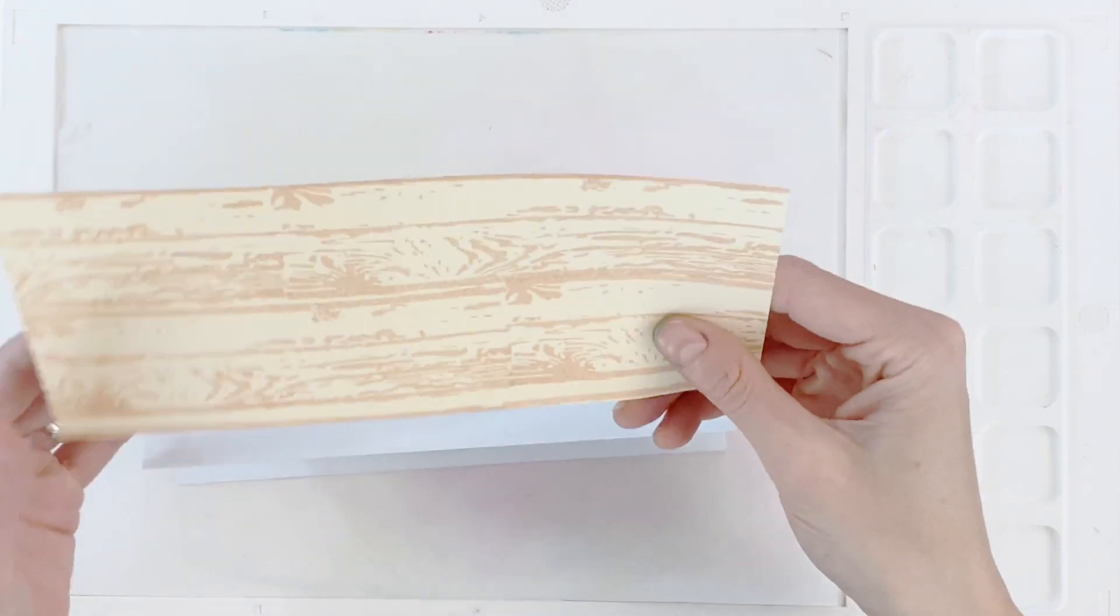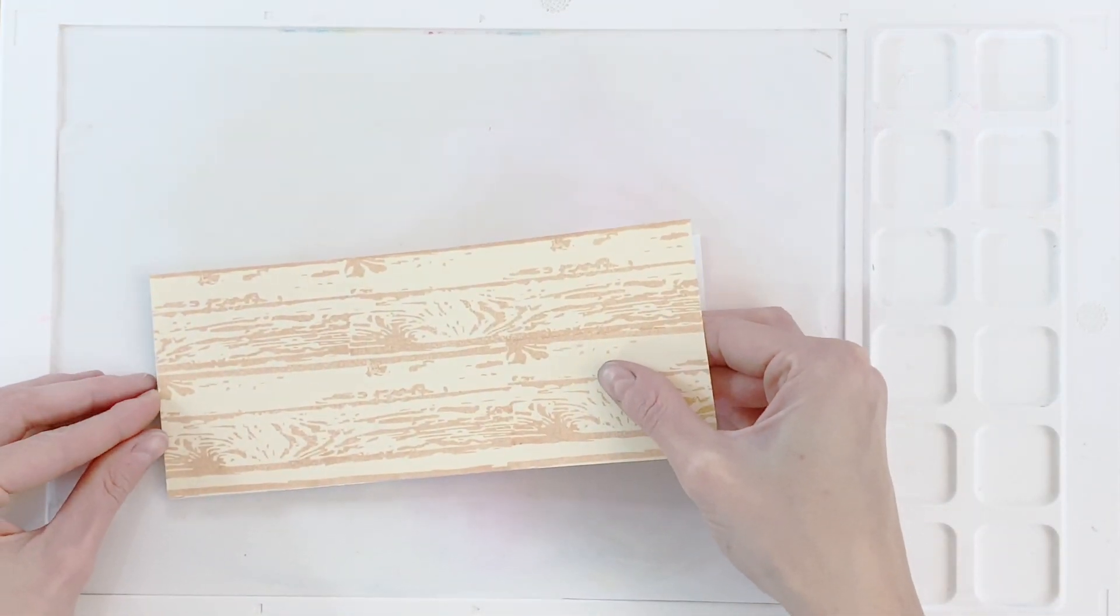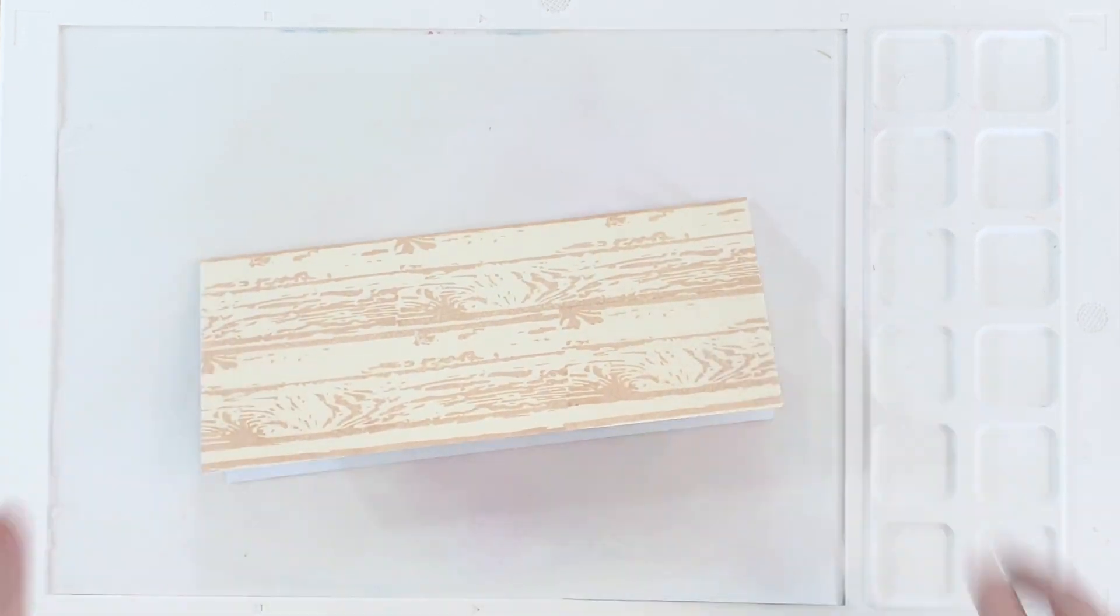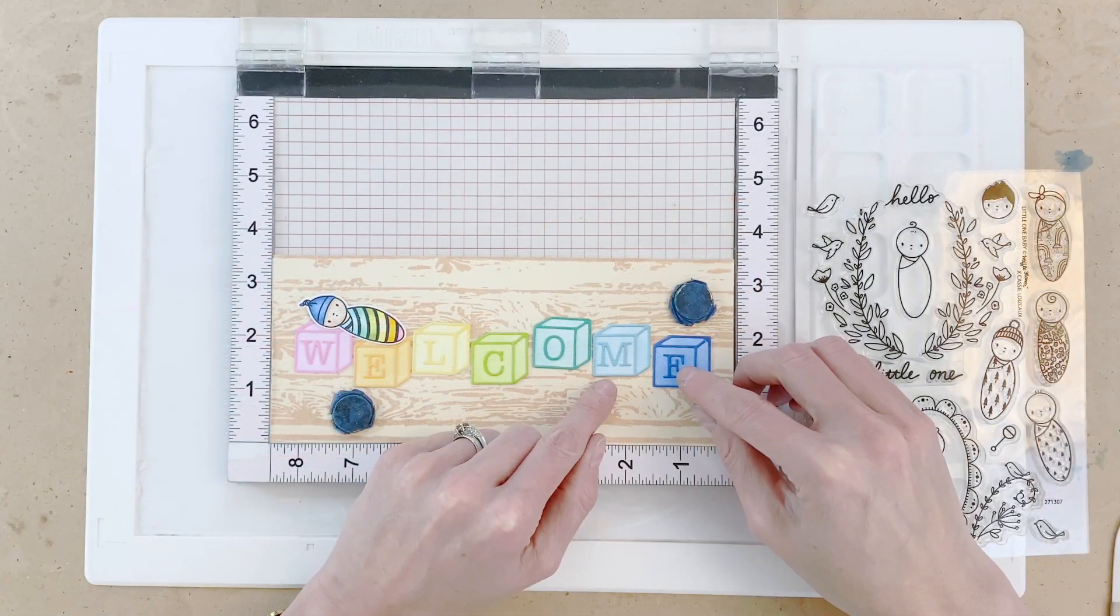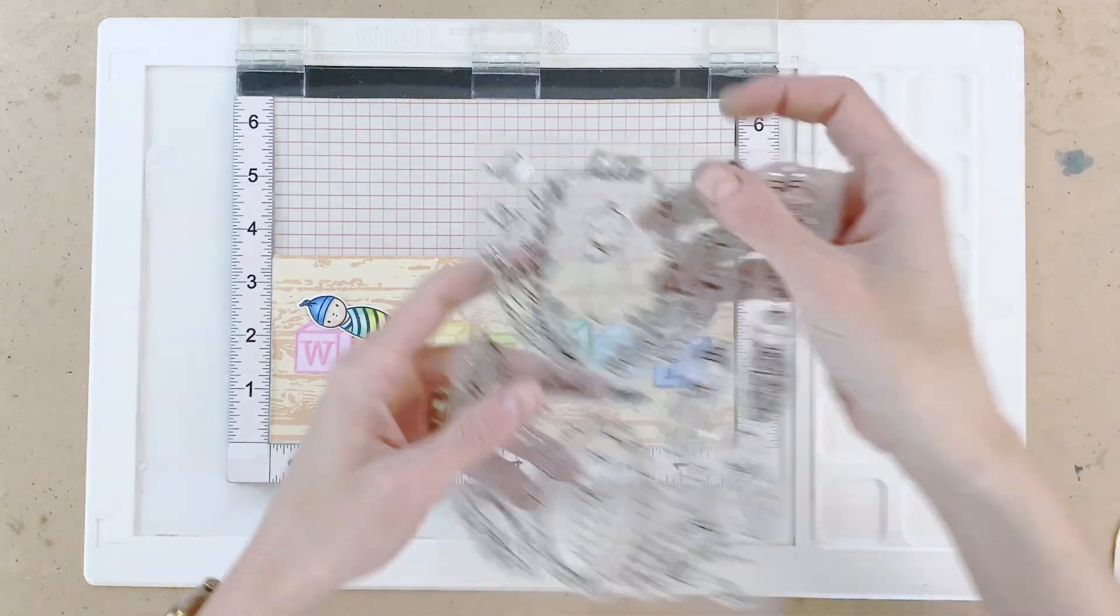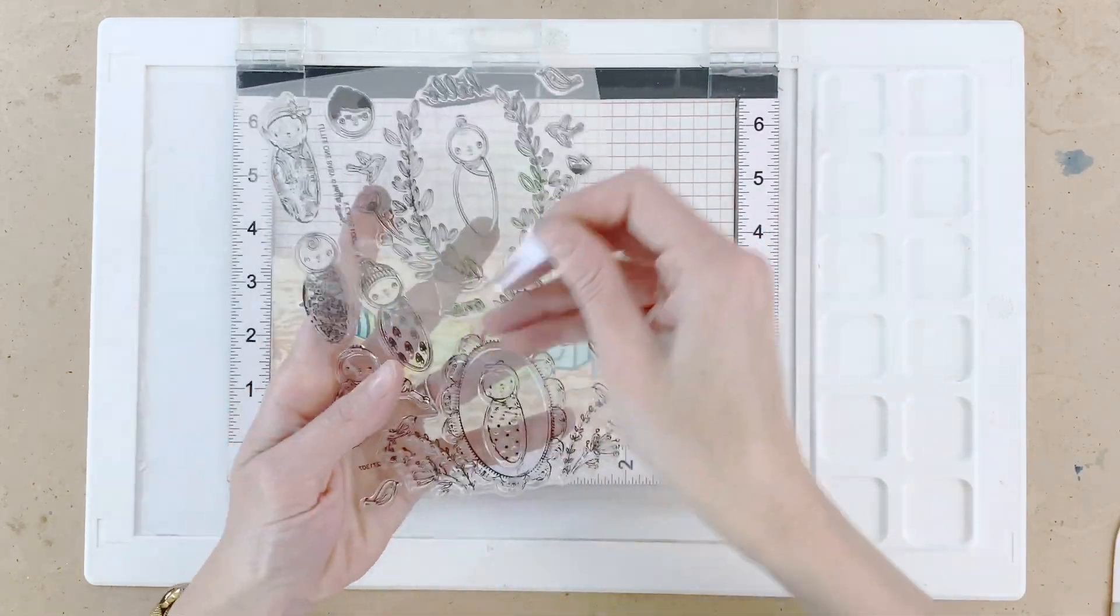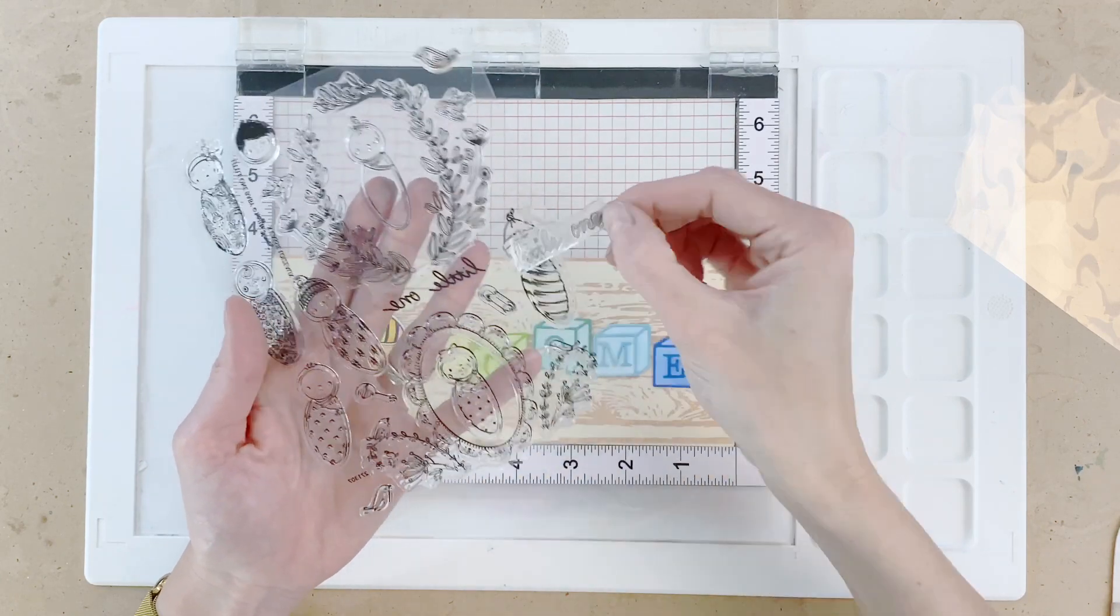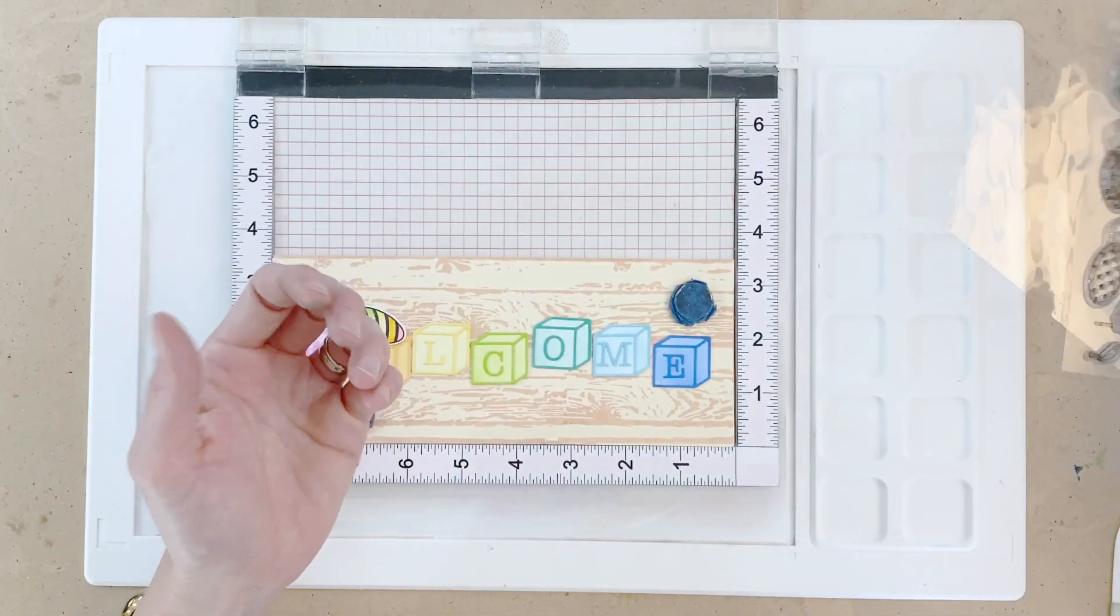So now that my base is made I'm going to just put some tape down onto the front and then stick down that wood grain background that we created and we are almost ready to put this card together but we do have to stamp our sentiment real quick. I just arranged my blocks just so I had an idea of where they are going to go and then I pulled off this little one.